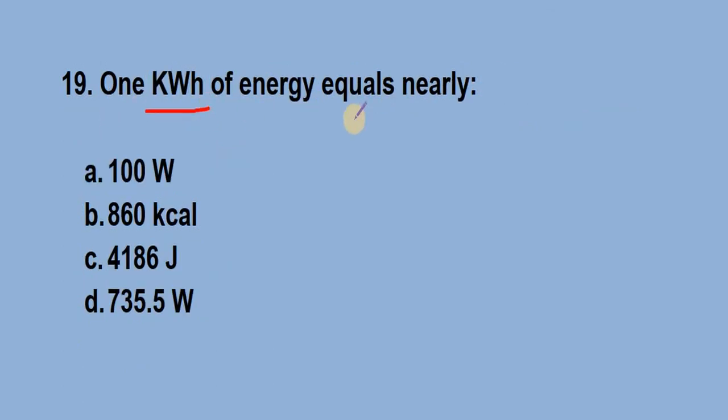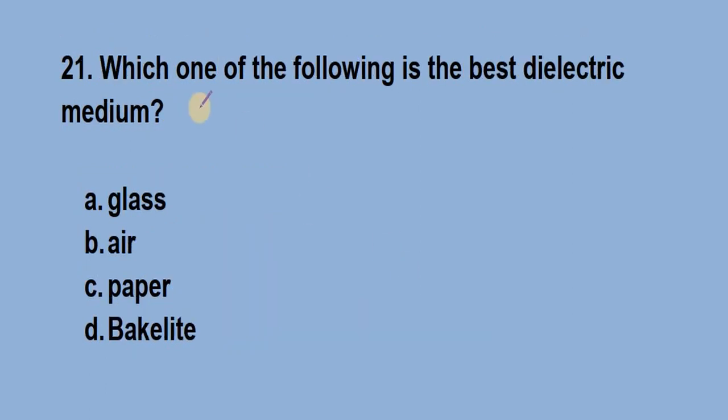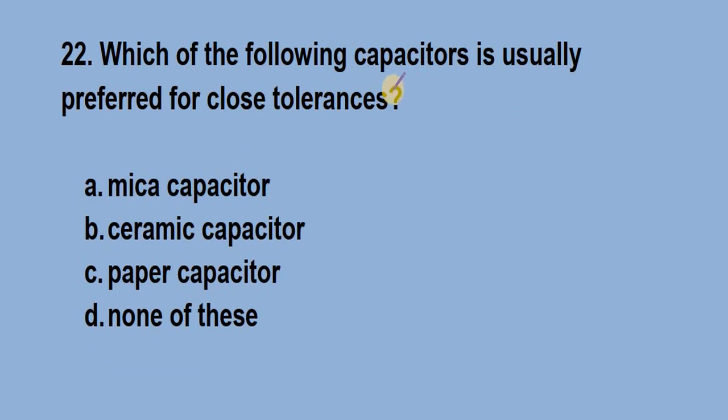Question number 19: 1 kWh of energy equals nearly? Answer is option B, 860 kcal. Question number 20: An electrolytic capacitor is generally made to provide? Answer is option D, large value of capacitance. Question number 21: Which of the following is the best dielectric medium? Answer is option B, vacuum. Question number 22: Which of the following capacitors is usually preferred for close tolerance? Answer is option A, mica capacitor.